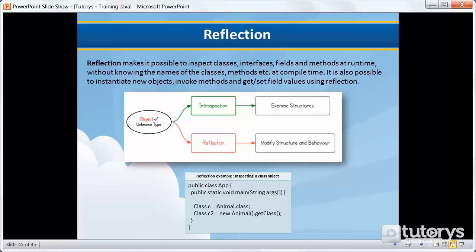The concept of reflection is often mixed with another concept which is known as introspection. Introspection is the ability of a program to examine the type or properties of an object at runtime, whereas reflection is the ability of a program to examine and modify the structure and behavior of an object at runtime, as you can see in this diagram.